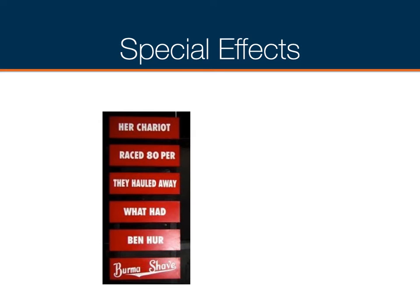One of the most famous advertising campaigns in U.S. history was a sequence billboard campaign for Burma Shave, starting back in the 1940s. Each panel would be a separate sign by the side of the road. The first would say 'Her chariot,' then a couple seconds later 'Raced 80 per,' then an allusion to a famous film of the time, and then always ending with the Burma Shave logo. They got fairly scientific about it — they would distance the subsequent panels based on the speed limit in that particular area, so they knew exactly how many feet to put between each sign.